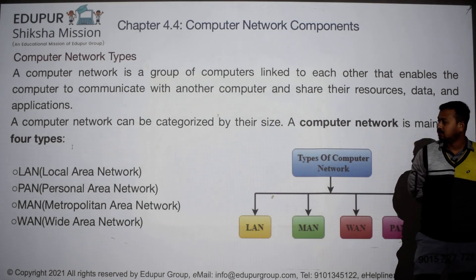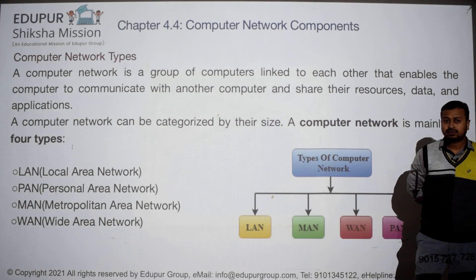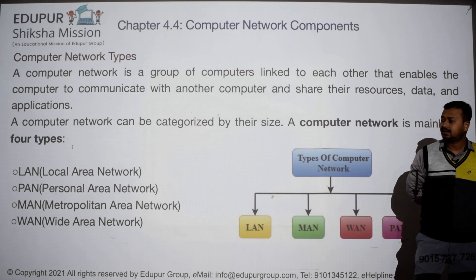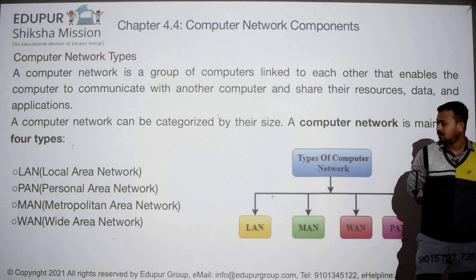Type of network: LAN, PAN, MAN, and WAN. LAN — local area network. PAN — personal area network. MAN — metropolitan area network. WAN — wide area network.